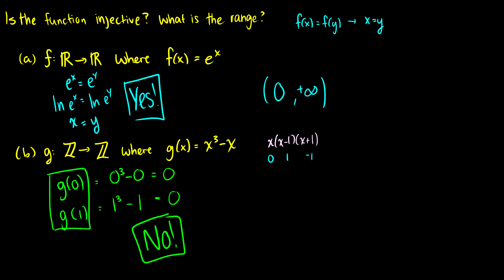Okay, and you can also check here g(-1), which would end up being negative 1 minus negative 1, which also equals 0. So we can see that there's actually three elements in the domain that map to the same element in the codomain.